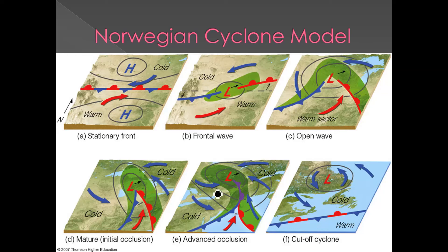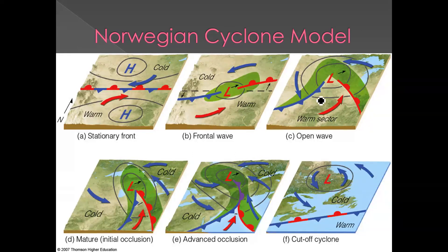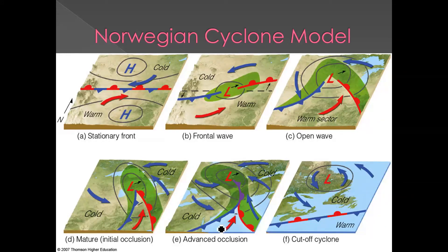So to summarize: we start with just a stable boundary between cold and warm air. Some kind of kink develops, creating a frontal wave. As this low pressure begins to intensify, we get an open wave. Eventually the cold front catches up to the warm front and occlusion begins — at this point, the storm is at its strongest. Then advanced occlusion occurs as the warm sector begins to shrink. This warm sector provides fuel to the storm — all that warm, moist air. Once that warm, moist air gets cut off, the front quickly dies off, becomes stationary again, and the cyclone breaks off.